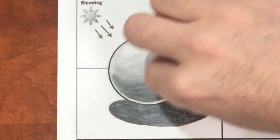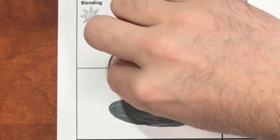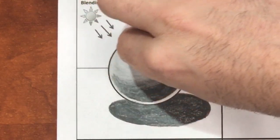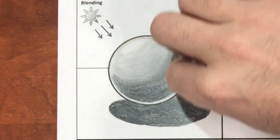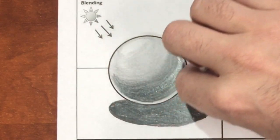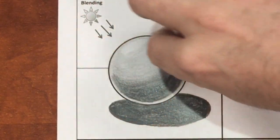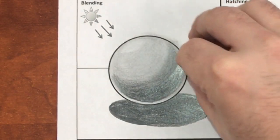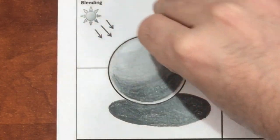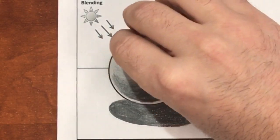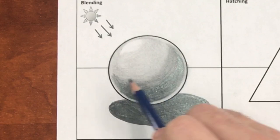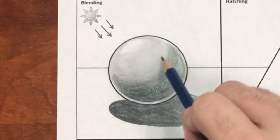Now I'm going back in with a piece of paper to kind of smooth out my tones and create a nice smooth transition from one tone to the next. Now I'm going back to add one more layer to finish it off.